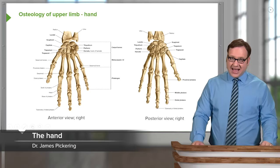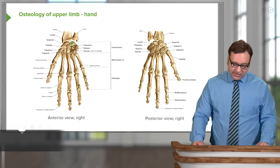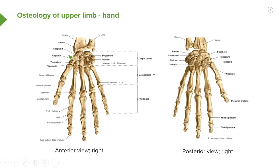If we now move into the hand, we can see we have a whole series of bones which are forming the wrist joint. These are known as carpal bones. We can see on the picture we then have five metacarpals running down in this direction. And then we have our phalanges that give rise to our digits.